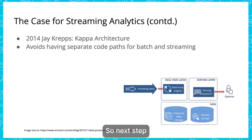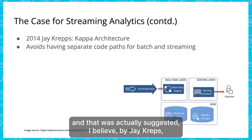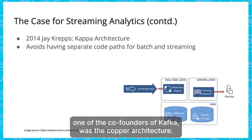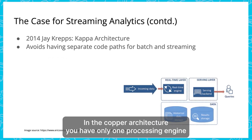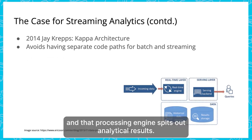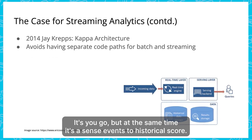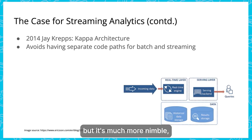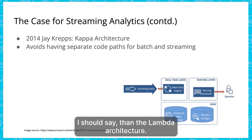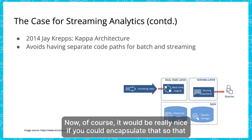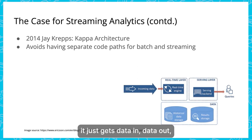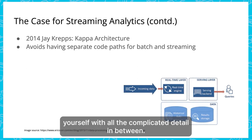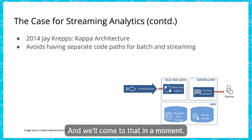The next step, suggested by Jay Kreps, one of the co-founders of Kafka, was the Kappa architecture. In the Kappa architecture you have only one processing engine that spits out analytical results as you go, while also sending events to historical storage. Still somewhat complex to build yourself, but much more nimble than the Lambda architecture. It would be nice to encapsulate that so you just get data in, data out.